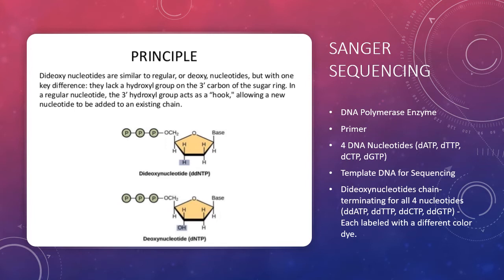Dideoxynucleotides are similar to regular or deoxynucleotides, but with one key difference. They lack a hydroxyl group on the three prime carbon of the sugar ring. In a regular nucleotide, the three prime hydroxyl group acts as a hook, allowing a nucleotide to be added to an existing chain. Below, you can see the illustrations of the dideoxynucleotide, or DDNTP, and then below that, the deoxynucleotide, the DNTP.